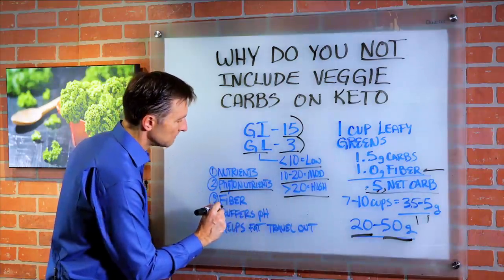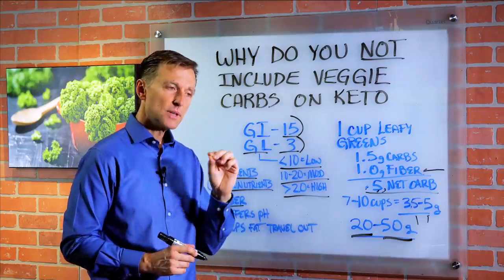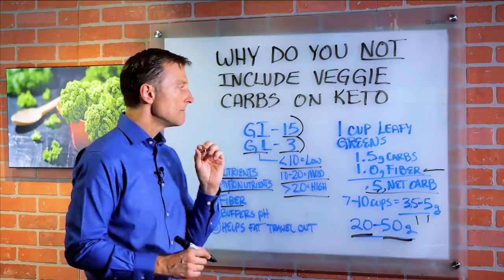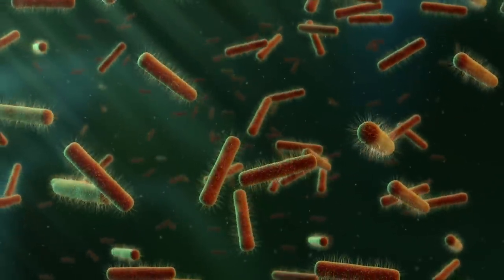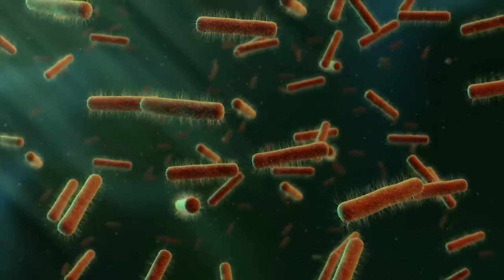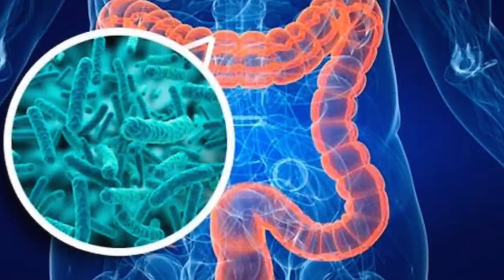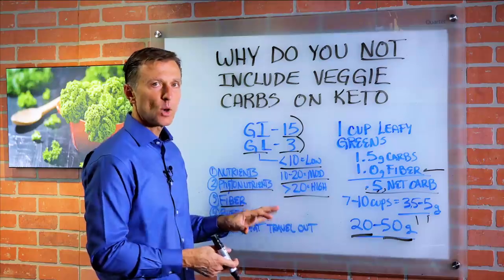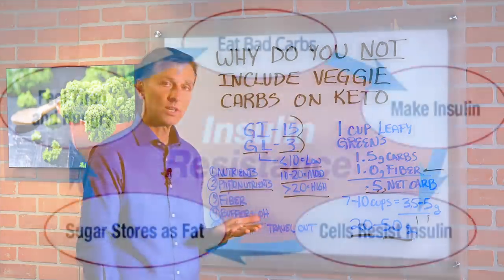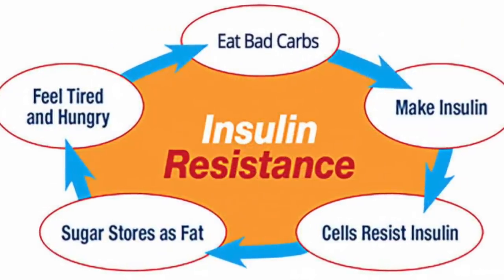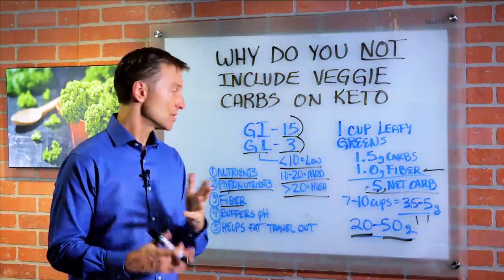Vegetables also provide the right type of fiber — mainly soluble — to feed your microbes. Those microbes then exchange back beneficial fatty acids like butyric acid, which feeds the colon cells. Without the fiber, you don't feed the colon cells. Butyric acid also helps improve insulin resistance and will actually help indirectly lower insulin, which is incredible.